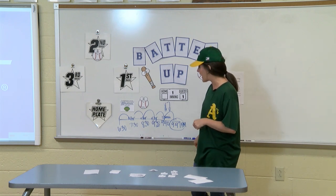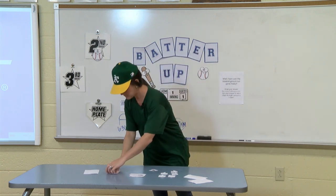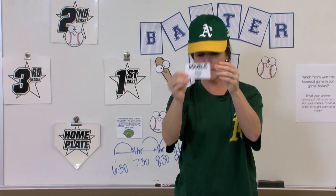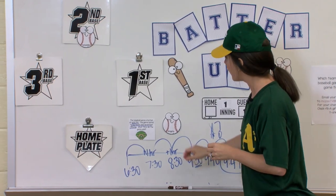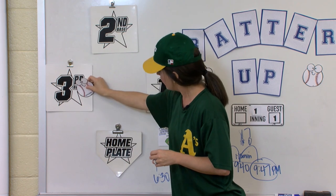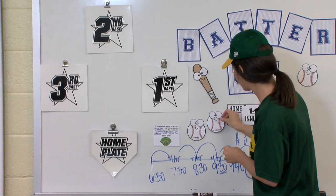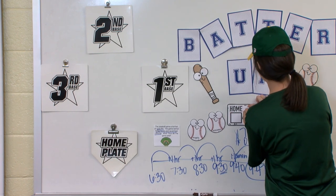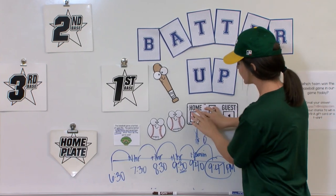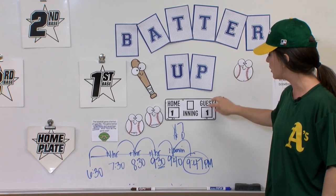Since we got that right, the Athletics can move again. They get a double — two bases. Moving one, two — that takes them home! The Athletics have scored a point. The score is now Angels 1, Athletics 1.